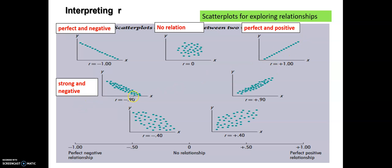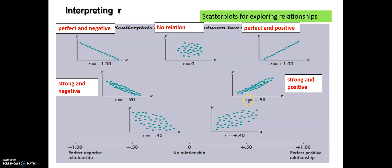Look at this example. In this case we have a correlation coefficient of negative 0.9, which means we still have a strong correlation, but it is negative — meaning when our x variable increases, our y variable decreases, so the direction is reversed. And in this case we have a strong and positive relationship with a correlation coefficient of plus 0.9, meaning when the x variable increases, the y variable also increases.